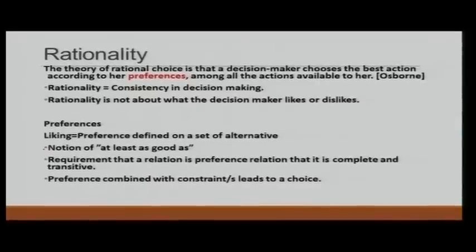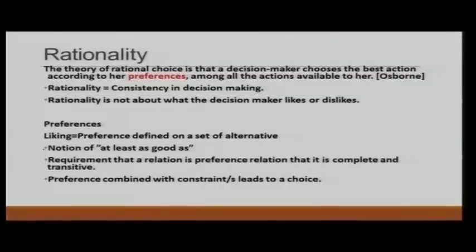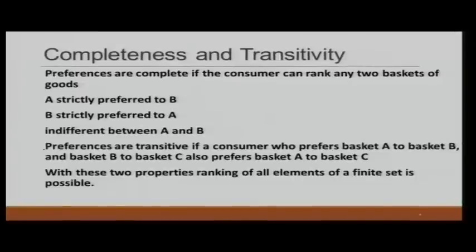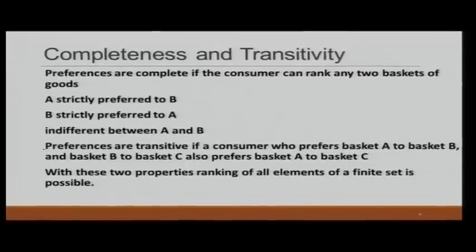Coming back to rationality — now that we know what preference means — rationality simply says that preferences have to satisfy two criteria: one is completeness, and the other is transitivity. What do we mean by completeness? When you have two choices, choice A or choice B, you should be able to say that A is better than B, or B is better than A, or that you are indifferent between A and B. When you can do that, your preference is complete.